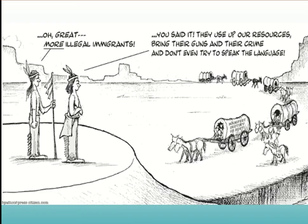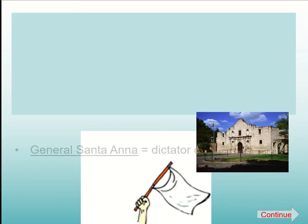Here we have a political cartoon that goes along with this time period. This is a more modern one, but we have these Native Americans talking about illegal immigrants — complaining that they're taking their resources, they bring their guns, all these other things. And the illegal immigrants they're referencing are the people on the wagon train, and their wagon train says 'Manifest Destiny or Bust.' So they're referencing all these people coming into Native American territory — a play on words and historical events.